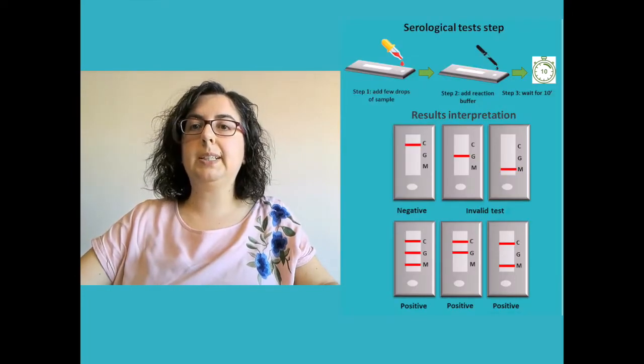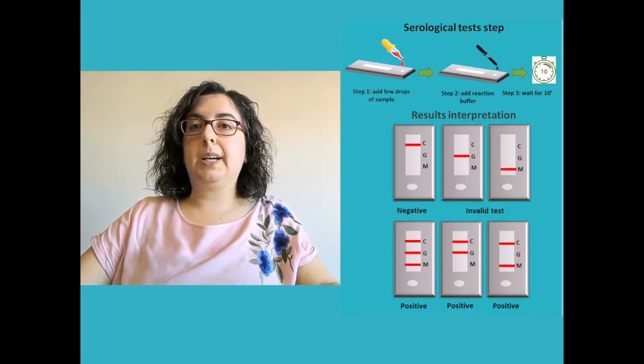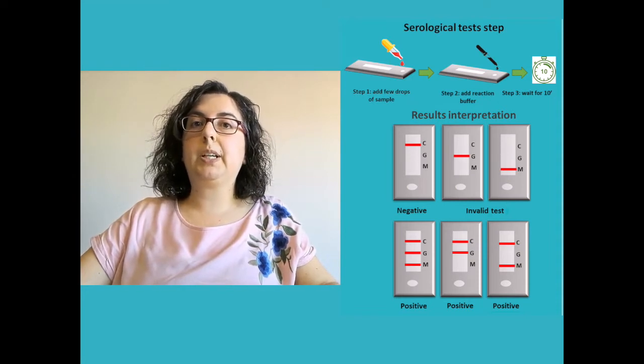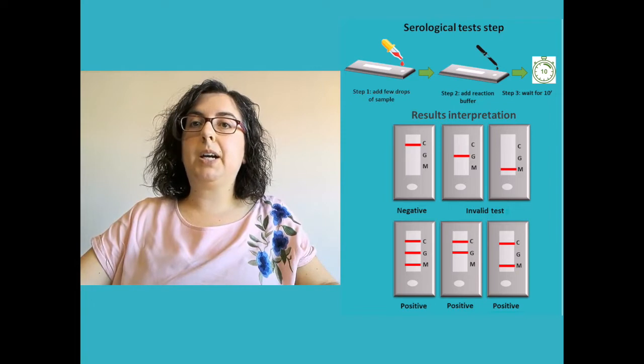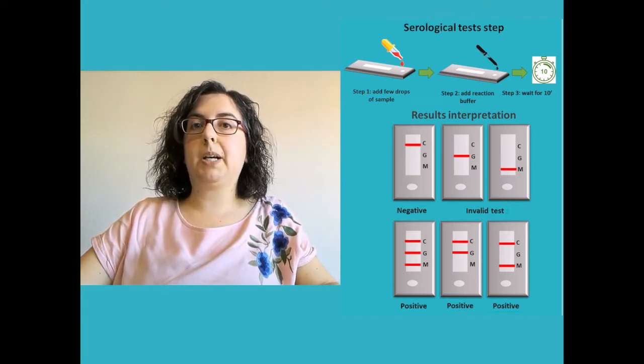In clinical practice, doctors see that IgM appear between the first week after the viral infection and then they disappear. In the meantime, IgG appear and remain in the blood longer.